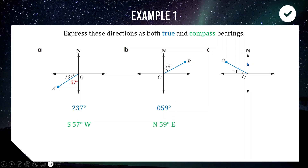For point C: rotating clockwise from north we go 90 to east, 180 to south, 270 to west, then add 24 more degrees — giving a true bearing of 294 degrees. For the compass bearing, taking 24 away from 90 gives 66 degrees, so the compass bearing is North 66 degrees West. Hopefully that gives an understanding of the two types of bearings and how we use them.